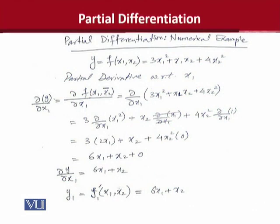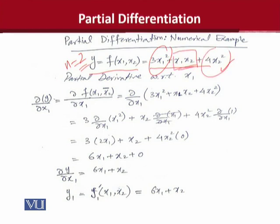We are assuming y is a function of x1 and x2 — यहाँ पर n is equal to 2 है. जैसे आपको बताया कि n की value 1 से greater होगी: 2, 3, 4 up to any positive value. Specifically speaking, यह function यह है — इसके अंदर x1 का square term है, x2 का square term है, और इसके अंदर x1 और x2 दोनों variables का product भी exist करता है.